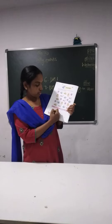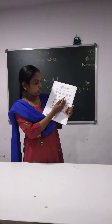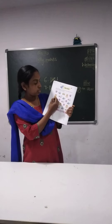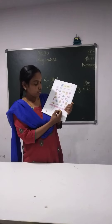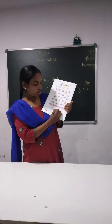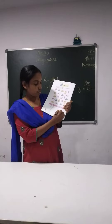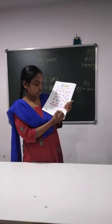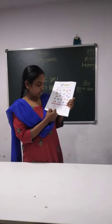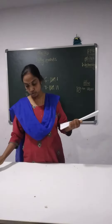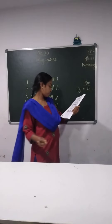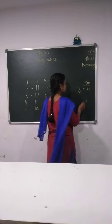Next is teddy bears. How many teddy bears we have? 1, 2, 3, 4. So we will draw here 1, 2, 3, 4. And we will write here 4. Same way, remaining other 3 you will be doing as homework. Page 112.